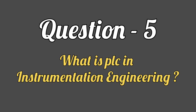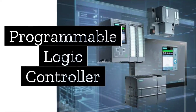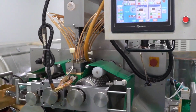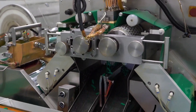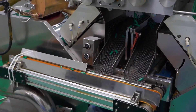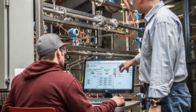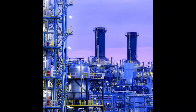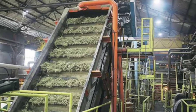Let's take the next question: What is PLC in instrumentation engineering? PLC stands for Programmable Logic Controller. This is a type of computer that is used to automate industrial processes such as manufacturing and assembly lines. PLCs are commonly used to control and monitor various systems and processes, and are used in almost all industries such as power plant, paper industry, chemical industry, and sugar industry.